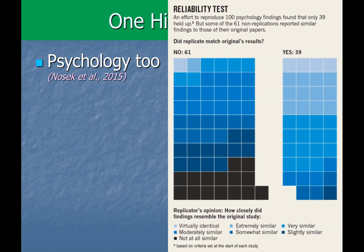Psychologists actually did something right: they went and systematically checked how many psychology results replicate. In a big study where a bunch of labs worked together to reproduce 100 psychology findings — following the same procedures and pre-approved criteria set at the start — they found that only 39 of those studies replicated according to the criteria they established at the outset. Those 39 definitely did repeat and support the original results.